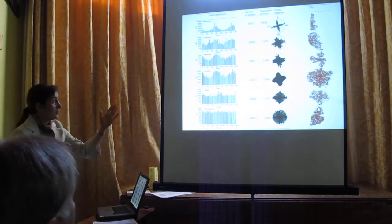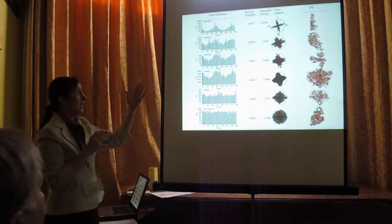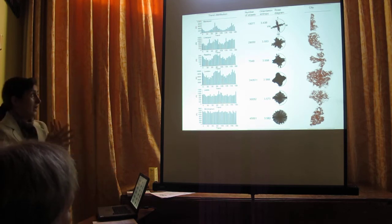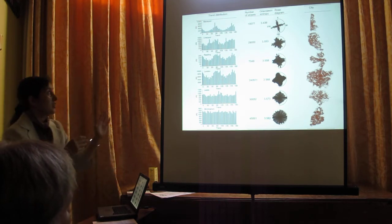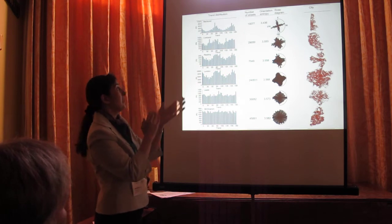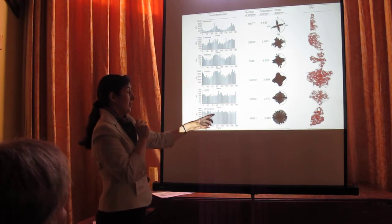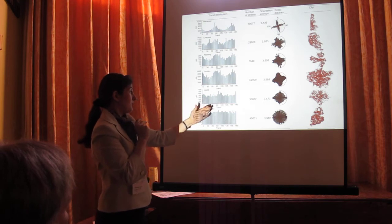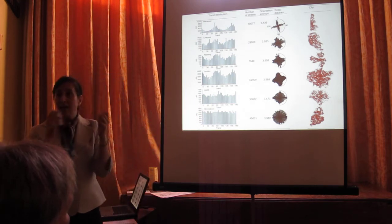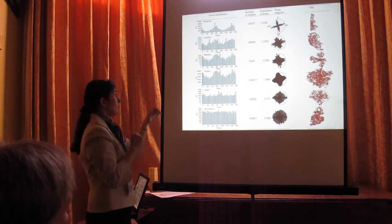I selected some cities and calculated the entropy associated with street orientation. For Liverpool with its orthogonal trend, the entropy is lower than for Birmingham with its more spread or dispersal of street orientation.